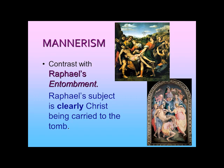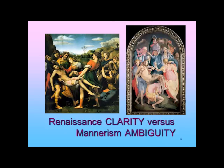In Pontormo's picture, Christ is being carried to the tomb, but we don't see the cross and we don't see the tomb. So that leaves a little Mannerist ambiguity. We often talk about both visually and in very complicated iconography this idea of Mannerist ambiguity.